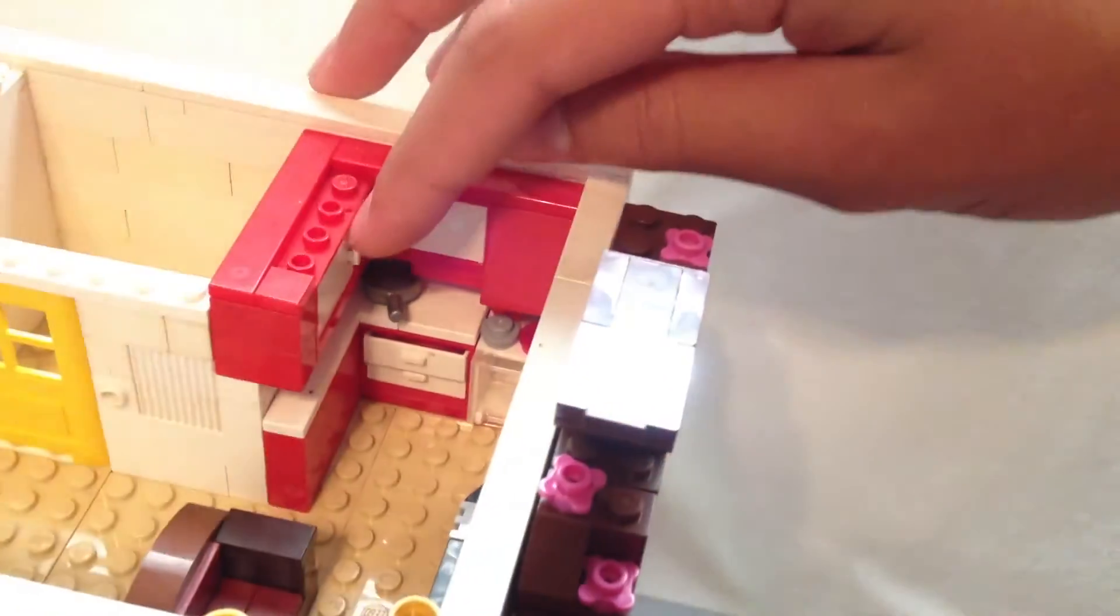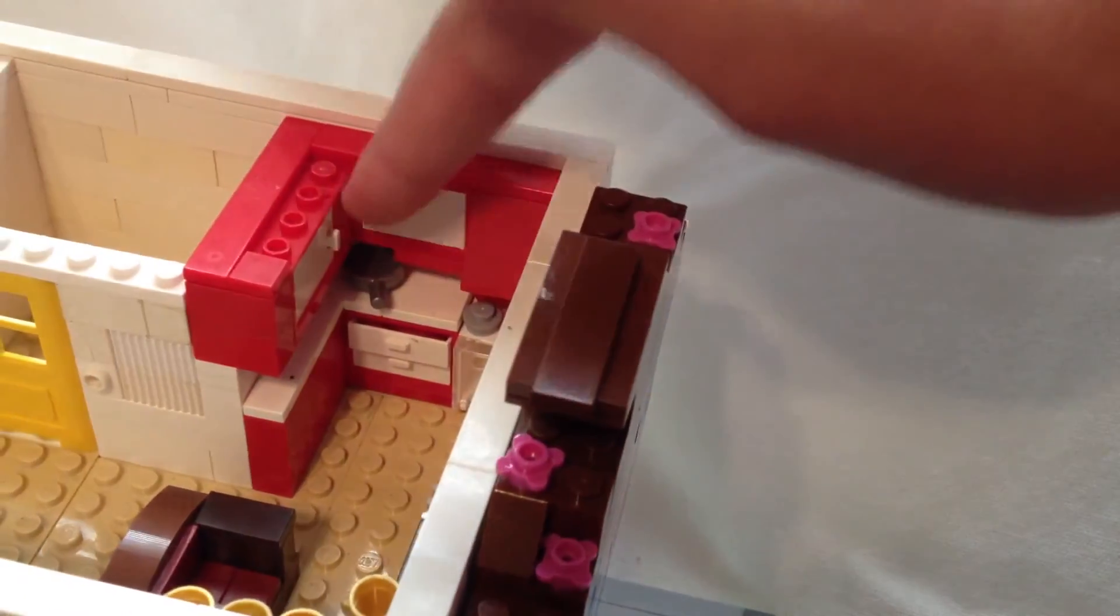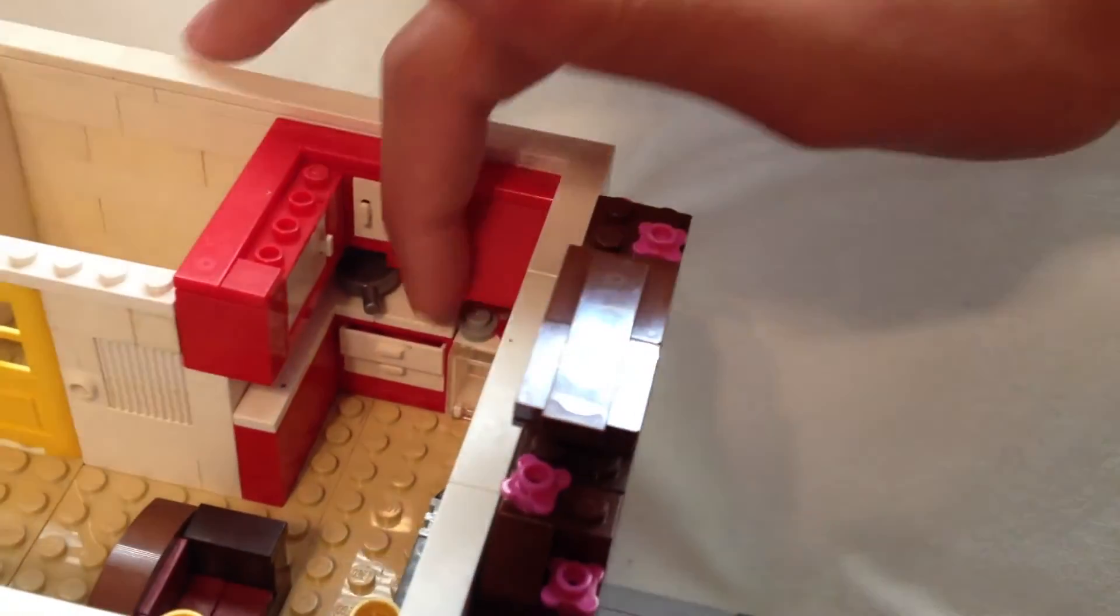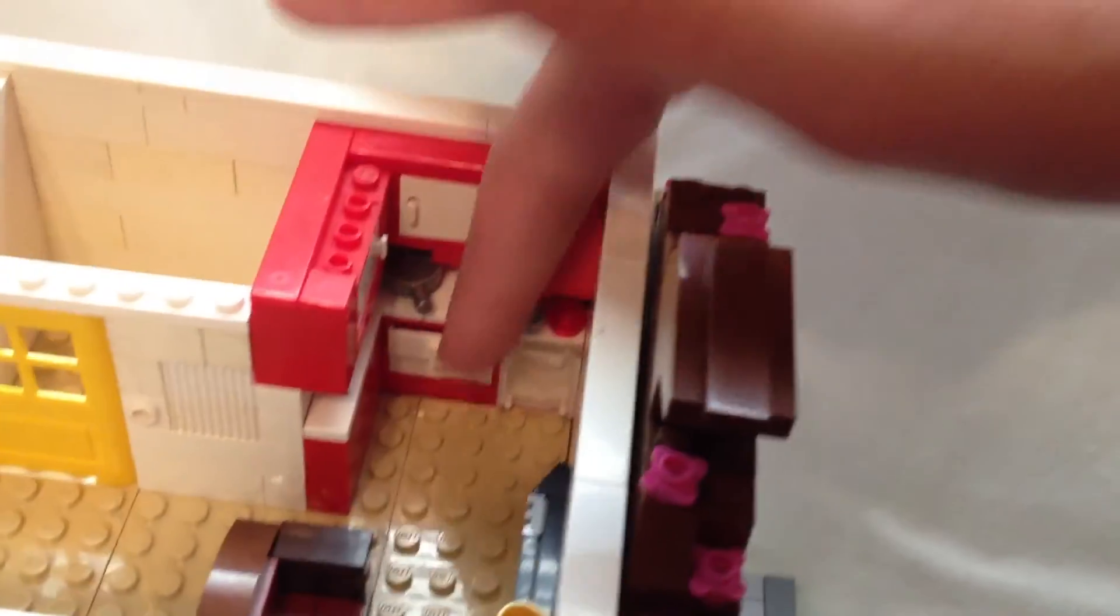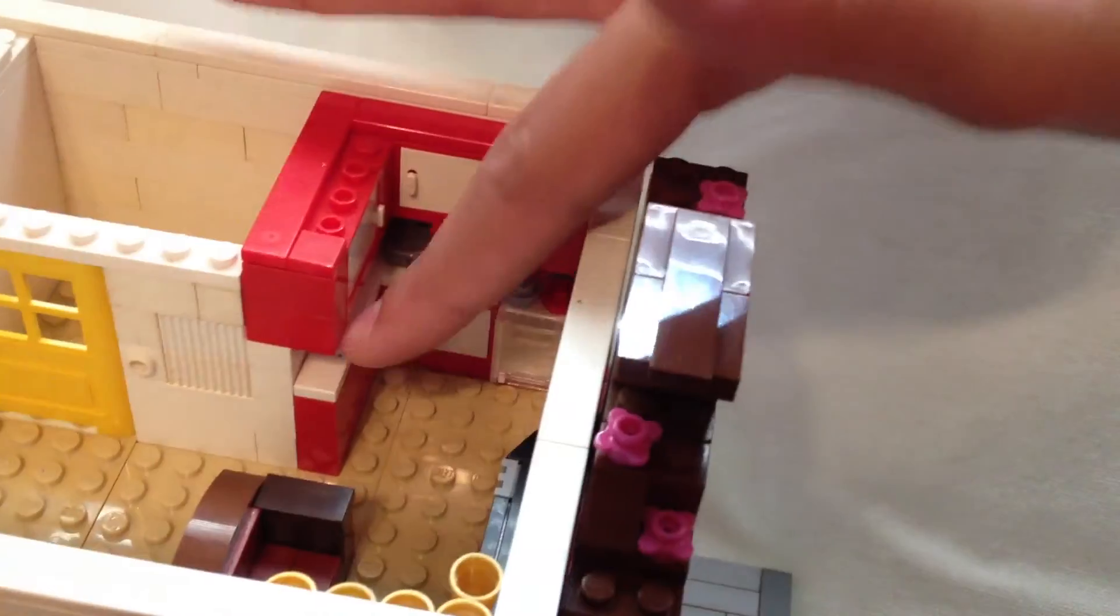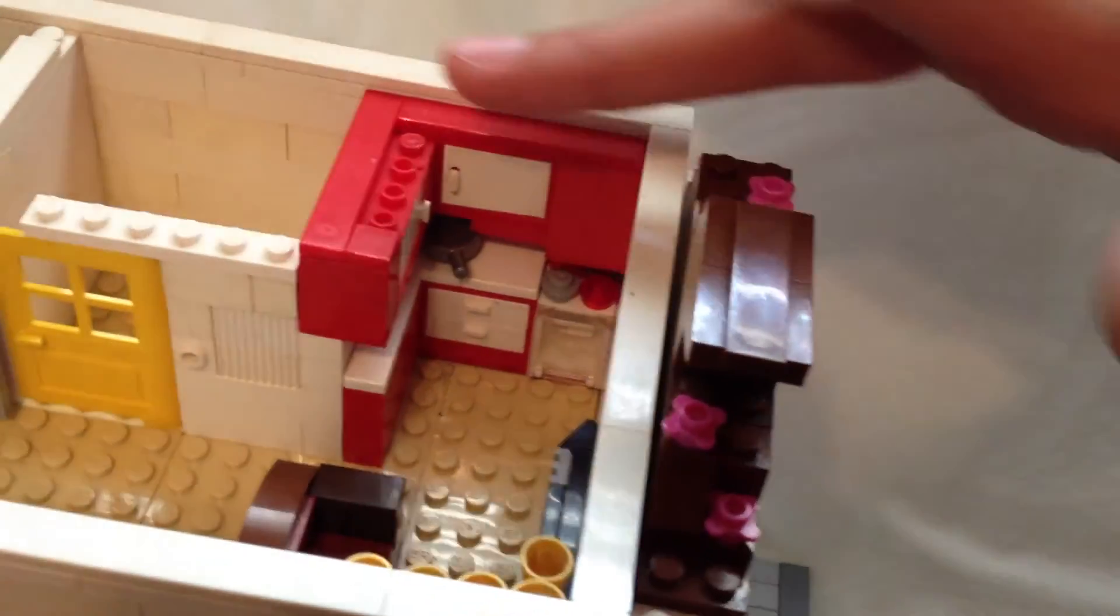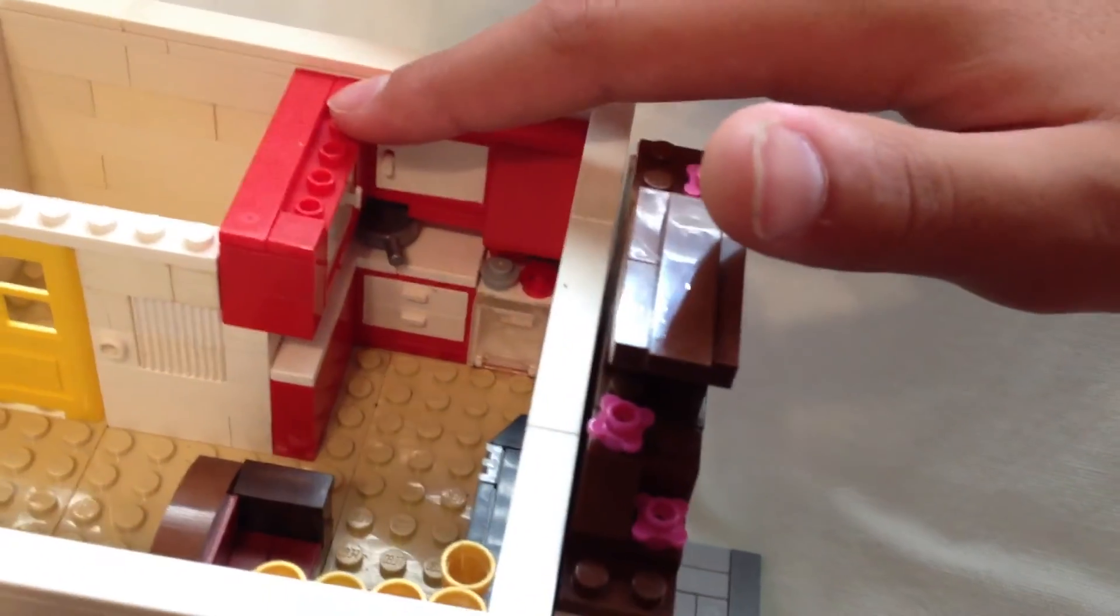It has two cabinets, one there, another one there. It has a range and oven set. And there is also a pan here, two drawers and just some counter space there. I still need one 1x4 red tile to cover in this space.